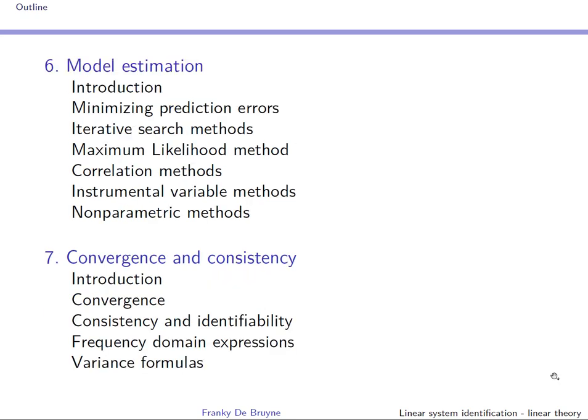In section 6 we talk about model estimation. We have generated data and selected a model structure, so we need to identify the underlying parameters using a prediction error cost minimized with iterative search methods. There is a clear link here with the course on optimization methods. The four remaining subsections and the entirety of section 7 will not be covered.